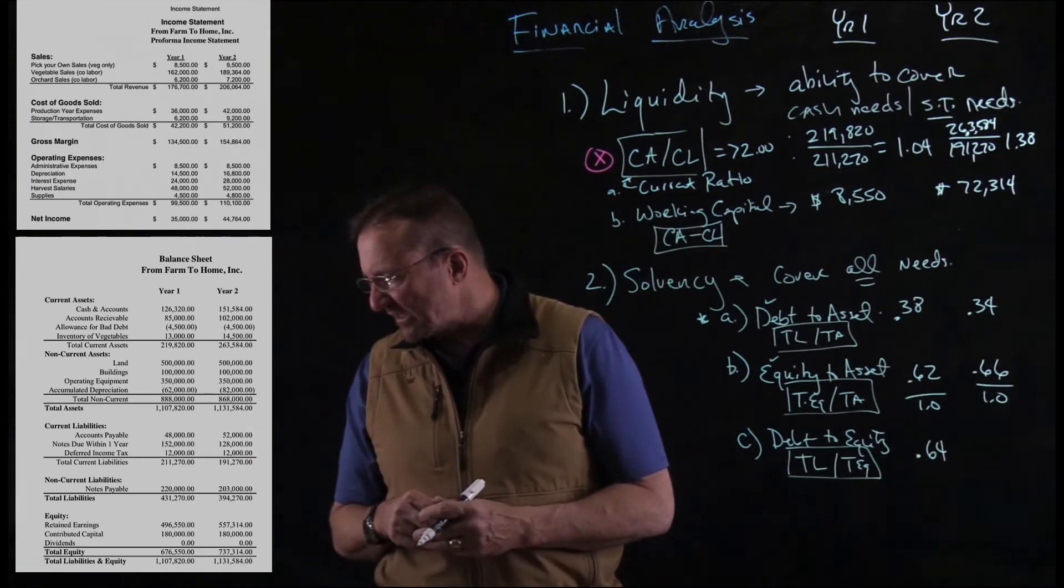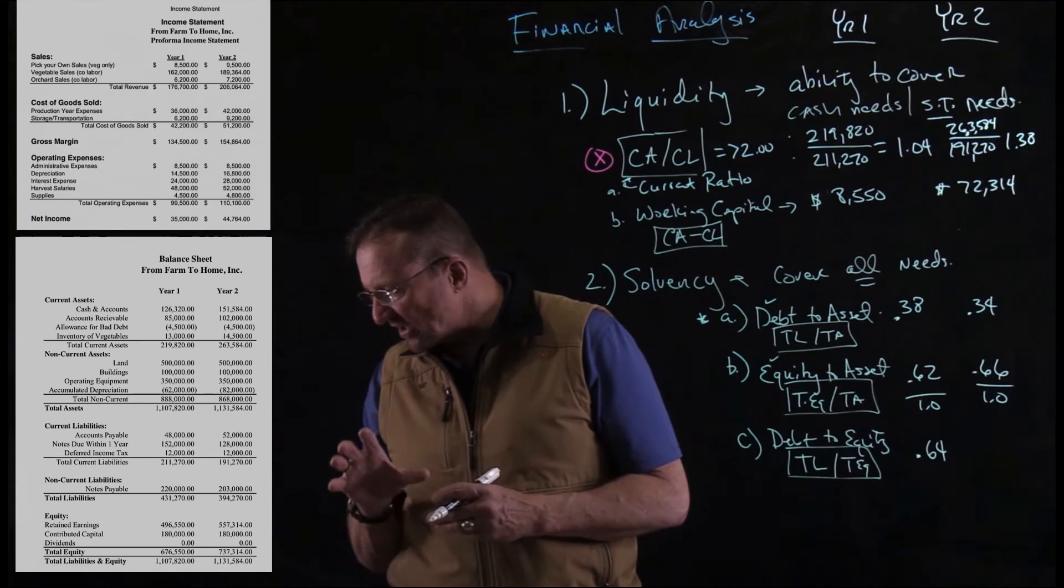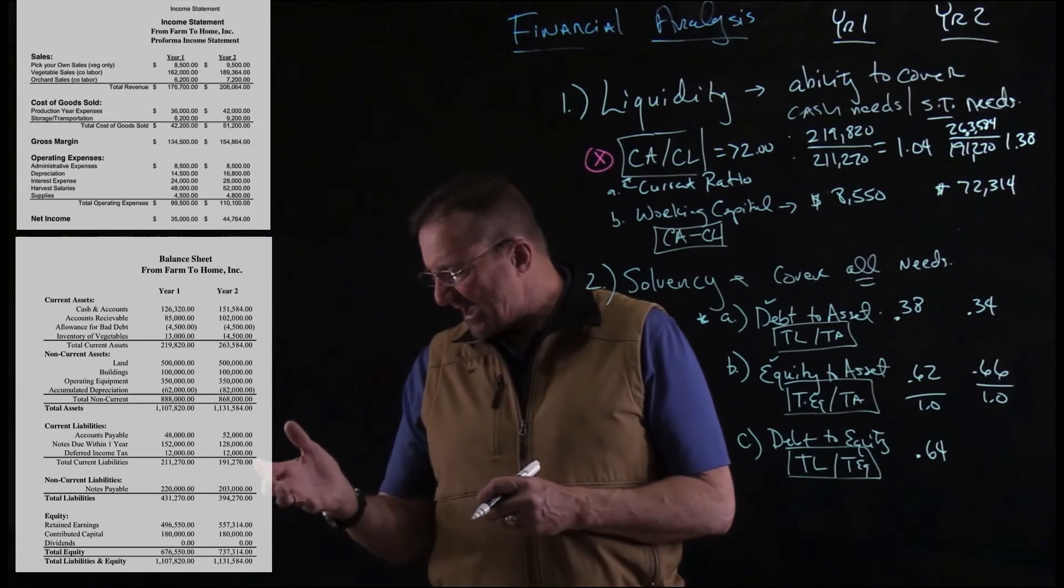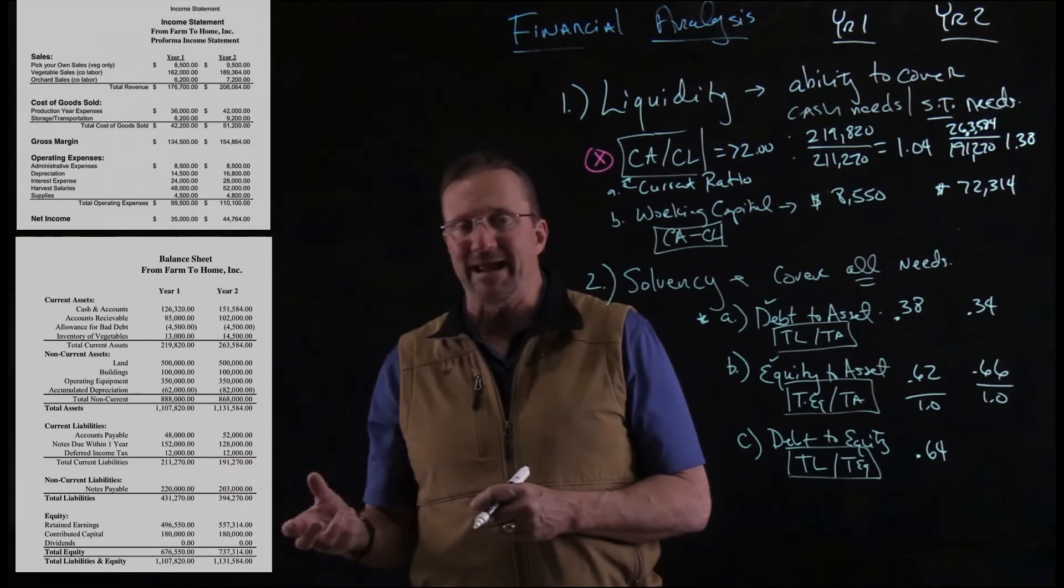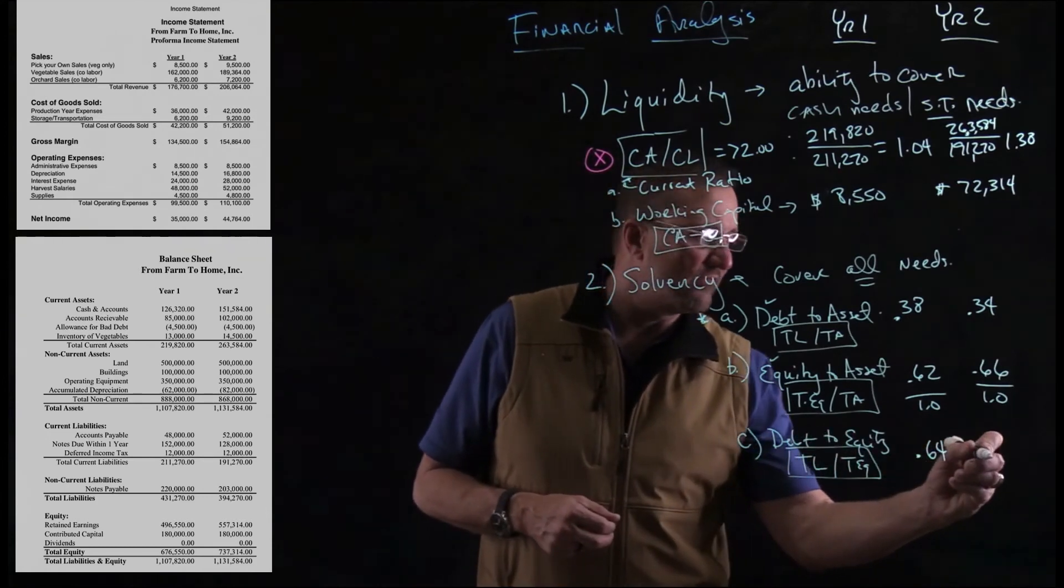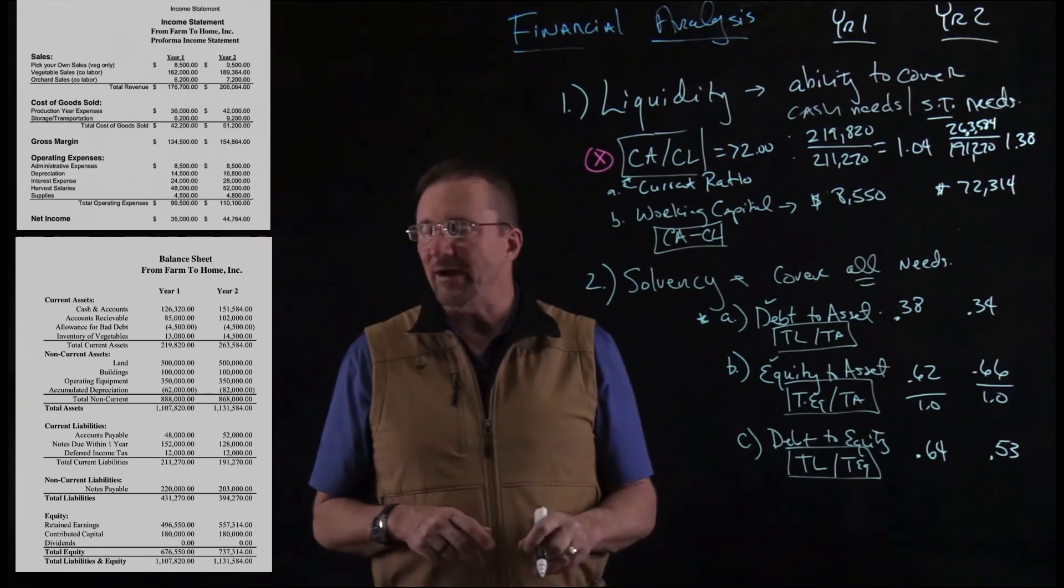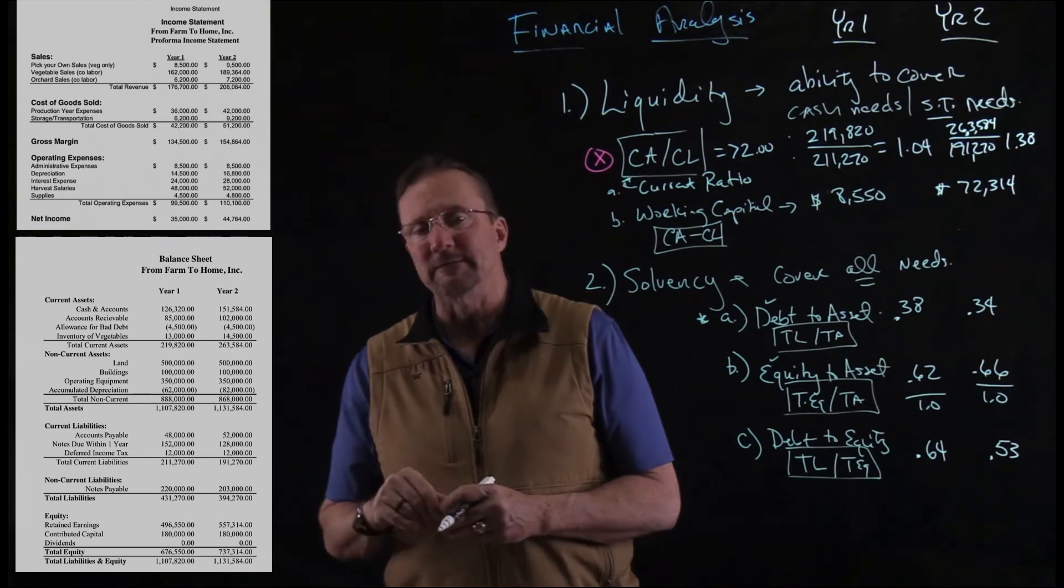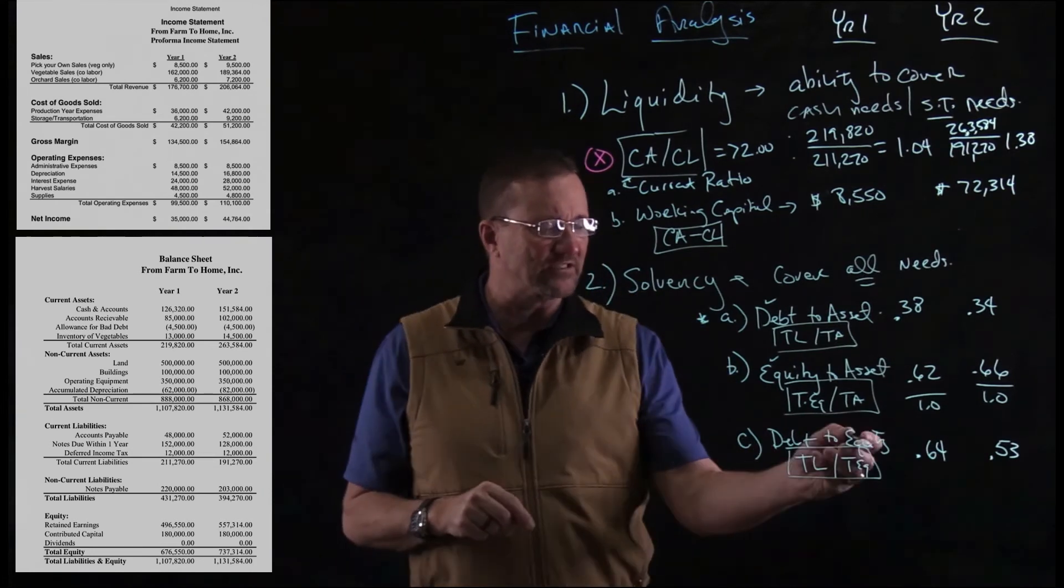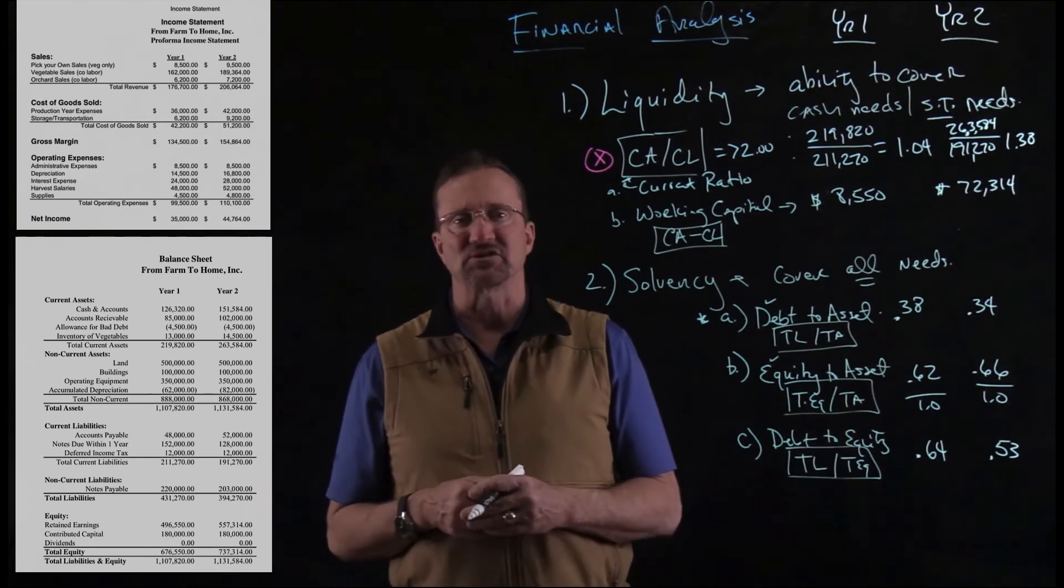And then in year two, we're taking total liabilities, 394,270, and we're dividing that by our equity of 737. Now, it looks like to me that our liabilities went down and it looks like to me our equity went up. We've seen some of this before. And so when we look at this ratio, the answer now is 0.53. And what you'd like to see, of course, is lower debt compared to equity. So as we look at the profit and loss, you can see in year one, we made $35,000. In year two, we made $44,745. So our profits are going up, which means our equity is going up. And it looks like we're not getting a lot more debt because the debt's dropping. So these ratios kind of illustrate that to us.